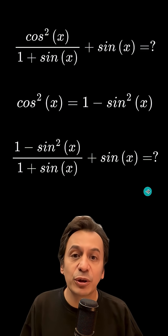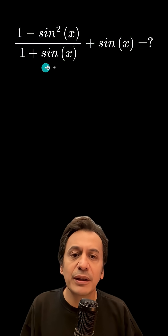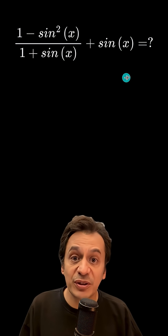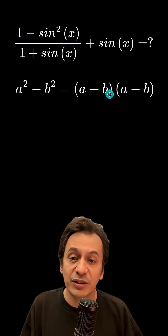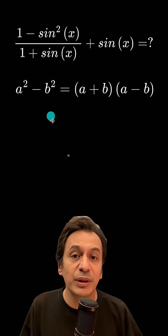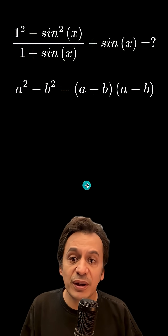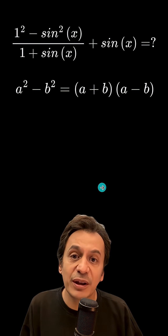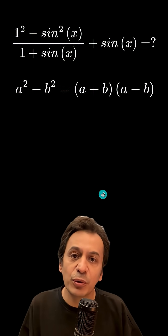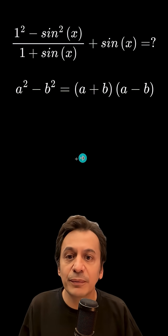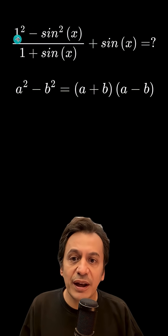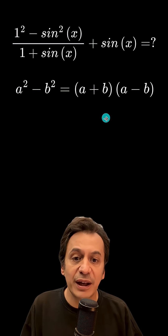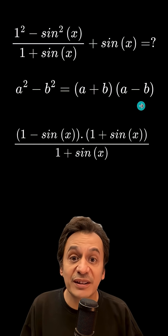Now I can solve this new question. In this new problem, I will also make use of the difference of squares identity. I can see this expression here as 1 squared, because saying 1 is the same as saying 1 squared. Therefore, I can write the expression here as 1 minus sine x times 1 plus sine x, just like in the identity.